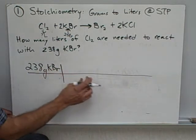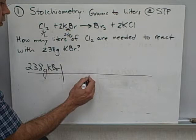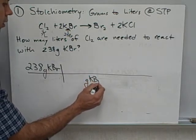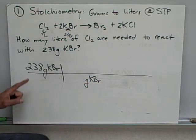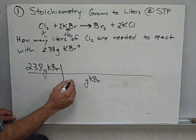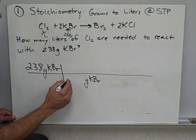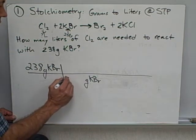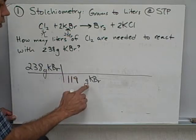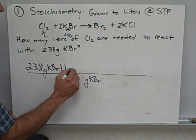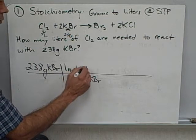I write down what I know. Grams of KBr goes down here. Now, what do I know about grams of KBr? From the periodic table, the molar mass of potassium bromide is 119 grams of KBr in one mole of KBr.